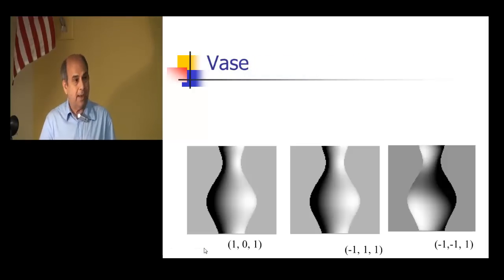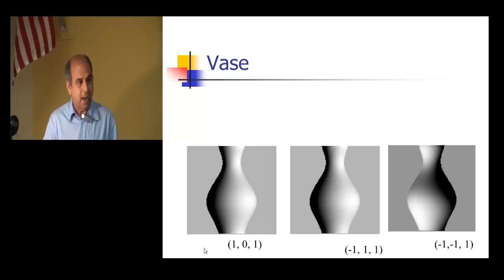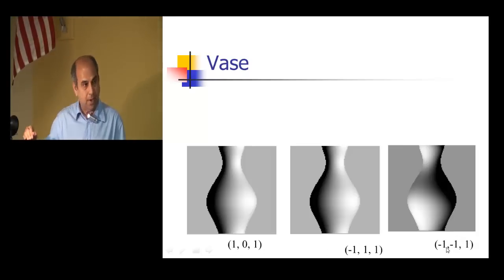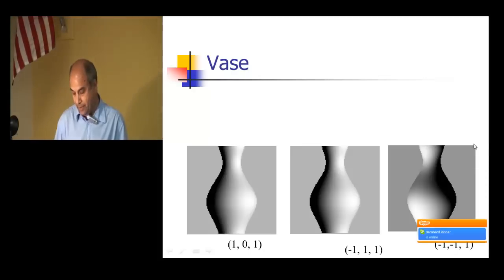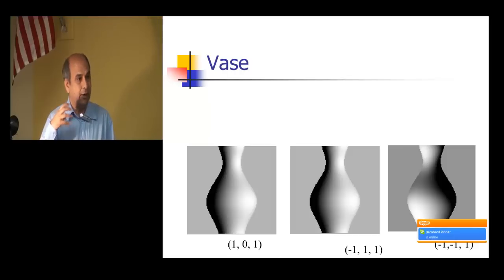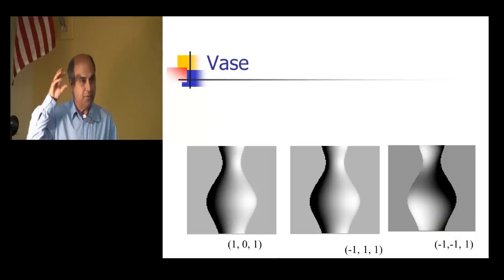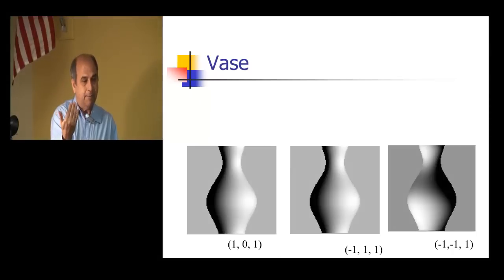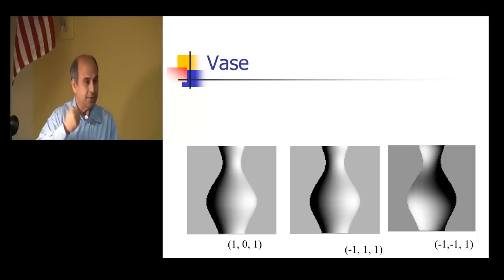Using this simple model, you can synthetically generate images — for example, synthetically generated images of a vase with different light sources at different positions like (-1,-1,1) in X, Y, Z. Graphics will take a 3D model of the vase, assume where the light source is, and synthesize an image. In computer vision we do the opposite: we take an image and recover where the light source was and what the shape of the object is — which is much harder.